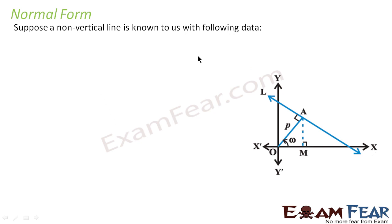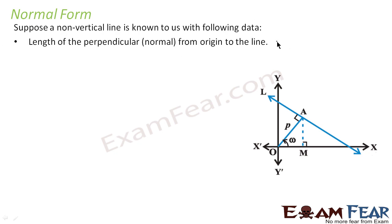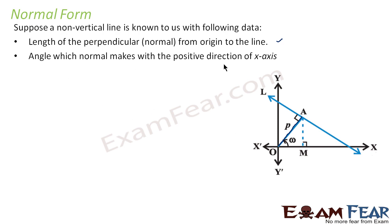Now let's understand normal form. Suppose there's a non-vertical line — because in normal form, if it's a vertical line, the slope is infinite. For a non-vertical line, we have the length of perpendicular from the origin to the line. We also have the angle which the normal makes with the positive direction of x. This normal makes angle omega with the positive direction of x. So we have two inputs: the length of the perpendicular from origin to the line, and the angle which this perpendicular makes with the x-axis.